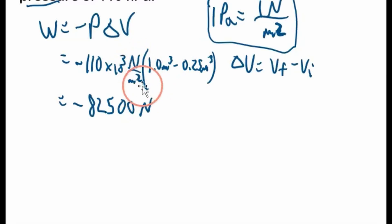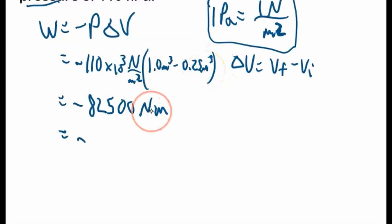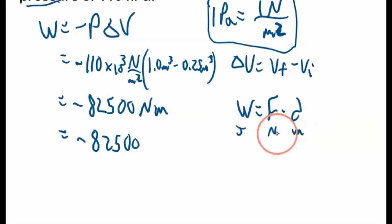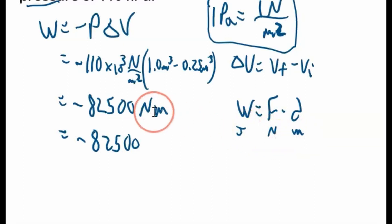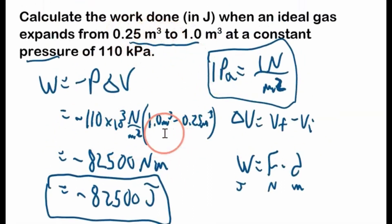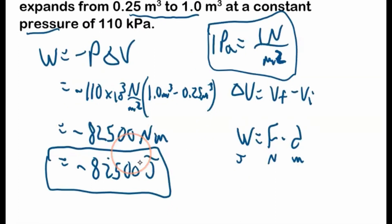So that's negative 82,500. Pascals are relatively small units, so we do see these big numbers. We have newtons here; meters squared cancels with meters cubed to give us meters. So this is newton-meters, which is joules. Negative 82,500 newton-meters, and to two significant figures, that's negative 82,000 joules.